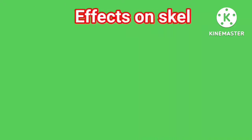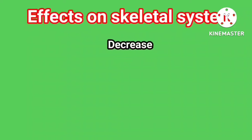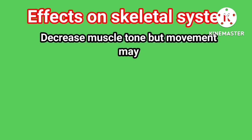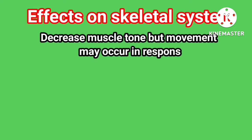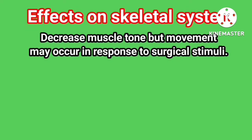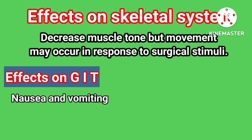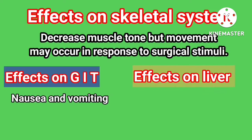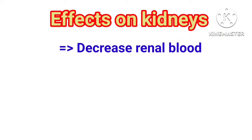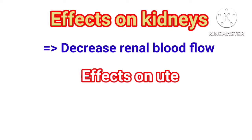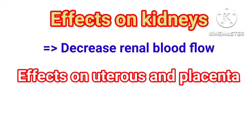Effects on the skeletal system: Propofol decreases muscle tone, but movement may occur in response to surgical stimuli. Effects on the GIT: may cause nausea and vomiting. Effects on the liver: decreases hepatic blood flow. Effects on the kidneys: decreases renal blood flow. Effects on the uterus and placenta: it crosses the placenta but has no significant effects.